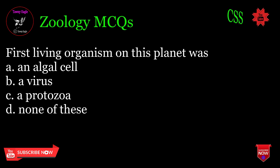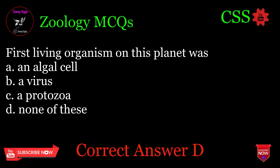First living organism on this planet was: A. An algal cell, B. A virus, C. A protozoa, D. None of these. Correct answer: D.